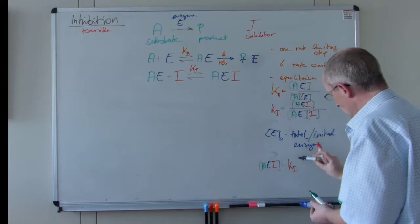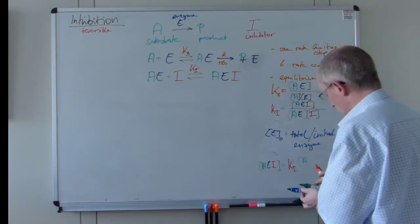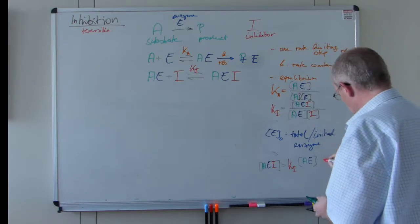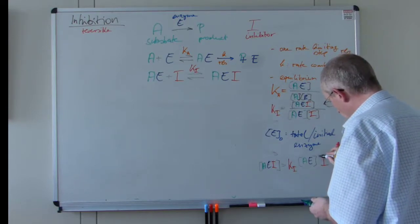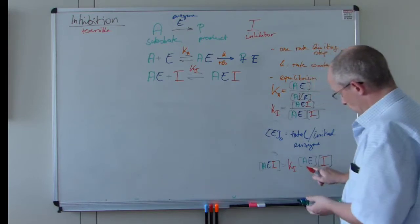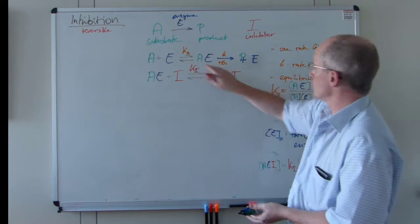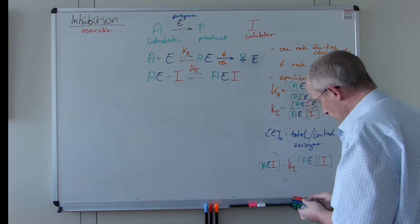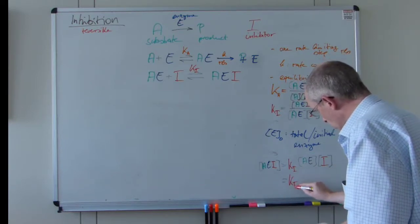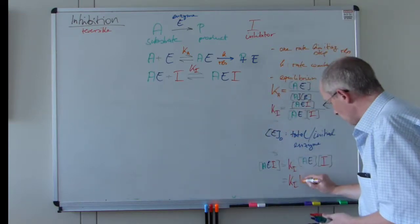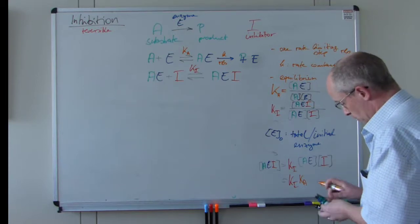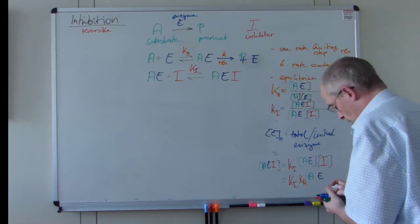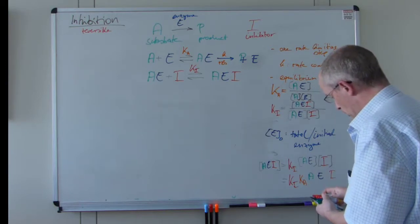So what we get is: we only want to substitute all our non-observables. So the AEI concentration equals Ki times A times E divided by E. Then this AE concentration is also not directly observable, so we substitute this back using the second equation. What we get is a bit messier: Ki times Ka times concentration A times concentration E times concentration I. All of these are concentrations.